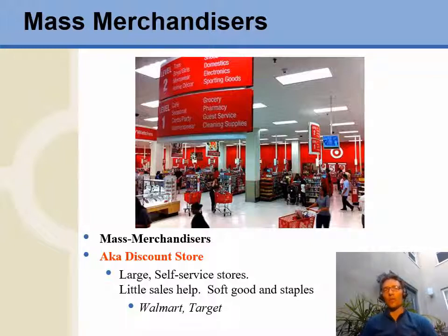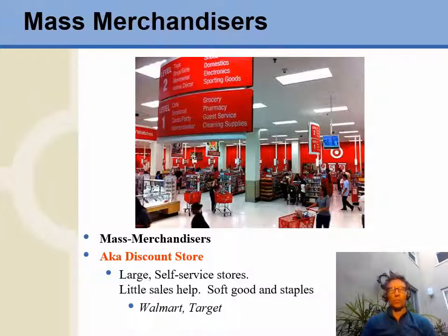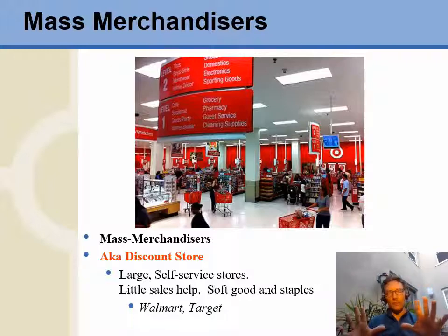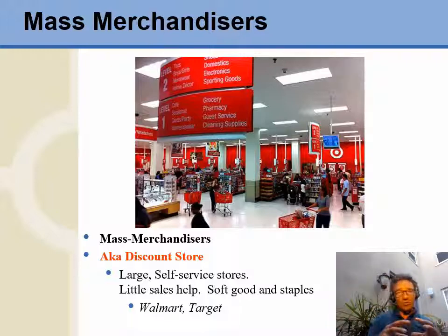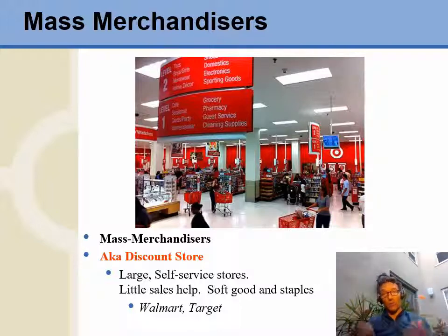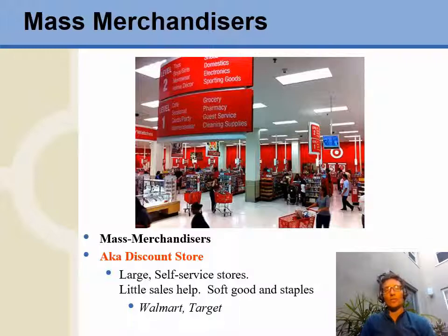Let's talk about the first of the five main retail formats. This category of store — you see a picture here of Target — we call these mass merchandisers, also known as a discount store. The retail formats are always kind of shifting and changing in size. You might have a specialty store that ends up being a large mass merchandiser, and a department store like Sears that ends up becoming a specialty store just to try to survive. So these formats aren't fixed; they're just ways of describing retailers.